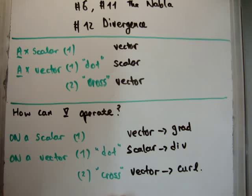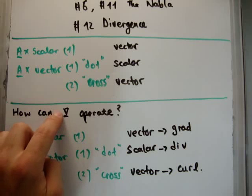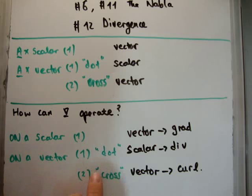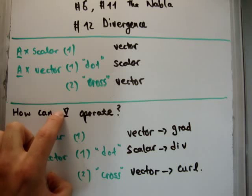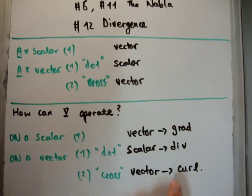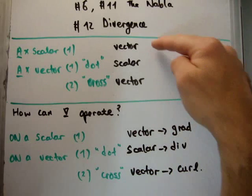So if you take the dot product between your NABLA operator and your vector, you're going to get back a vector.